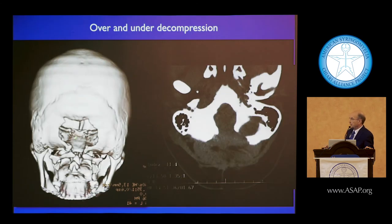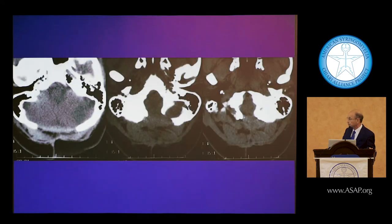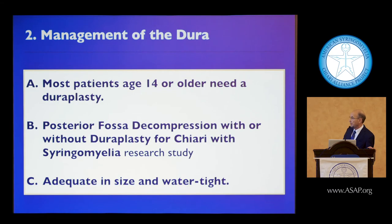To summarize: some people have over-decompression and under-decompression at the same time — too much here, but not enough at the choke point. If you're going to do a laminectomy of C1, take C1 to the edge before stopping. Here is her CT scan: she is still crowded at the choke point. The easy bone to remove is up high; the critical work is at the choke point. This is an over and under-decompression combined — the choke point is still not addressed, C1 is still present, there is no muscle coverage.